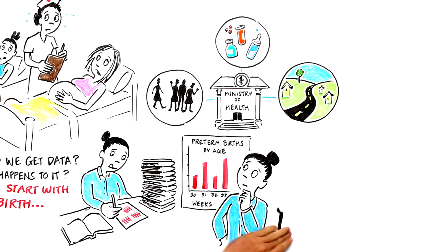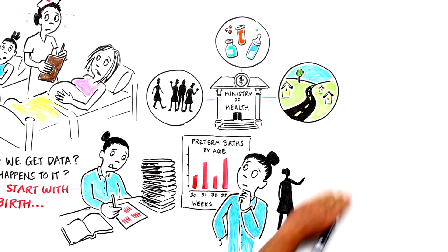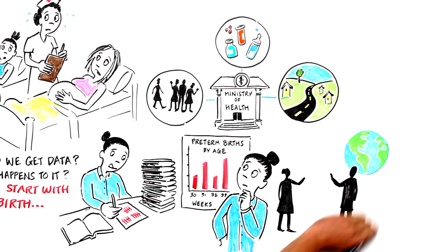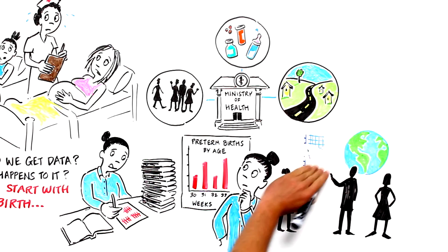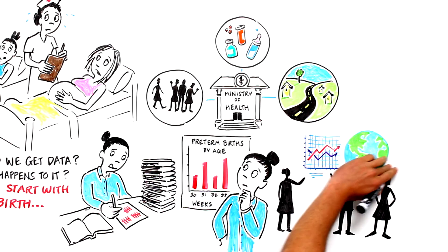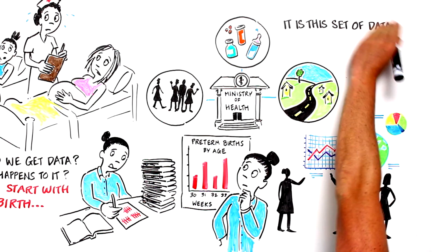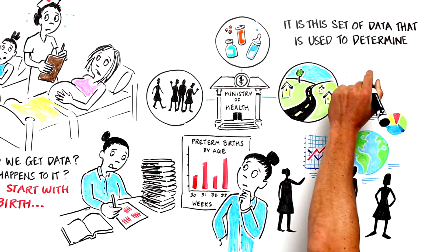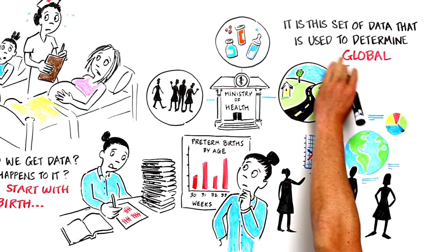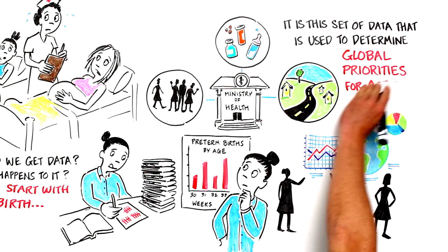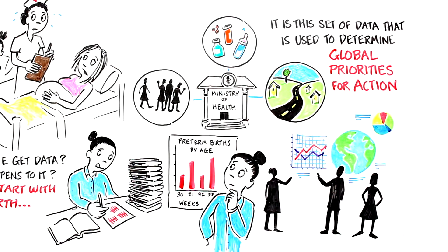The Ministry then packages the data and sends it to the World Health Organization, where birth weights, neonatal mortality, and preterm birth rates are compared to that of other countries. And it is this set of data that is used to determine global priorities for action.